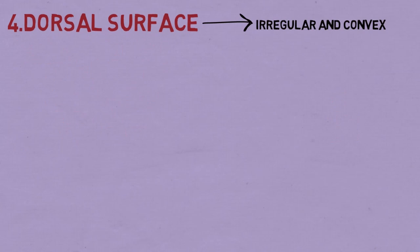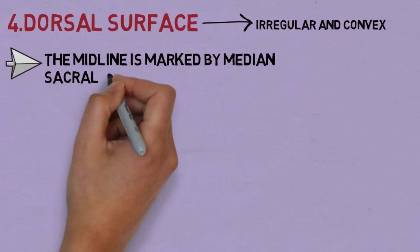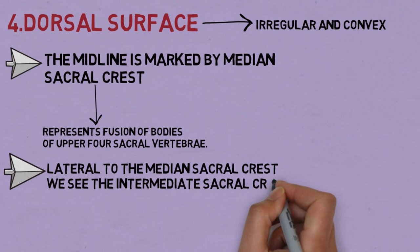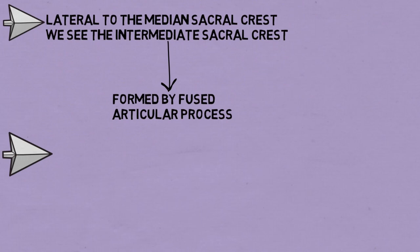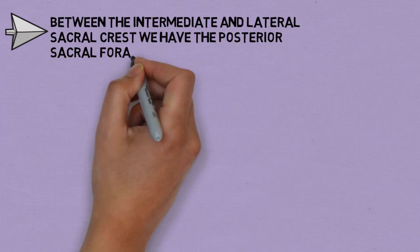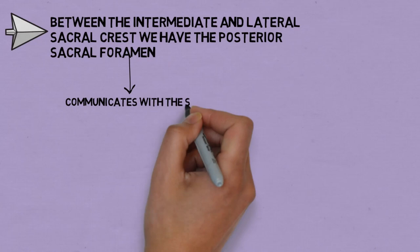Next we have the dorsal surface. The dorsal surface is irregular and convex. The midline is marked by the median sacral crest, which represents the fusion of the bodies of the upper four sacral vertebrae. Lateral to the median sacral crest is the intermediate sacral crest, formed by the fused articular processes of the sacral vertebrae. Lateral to the intermediate sacral crest is the lateral sacral crest, formed by the fused transverse processes. Between the intermediate and lateral sacral crests we have the posterior sacral foramen, which communicates with the sacral canal, and these foramen separate the intermediate part from the lateral part.